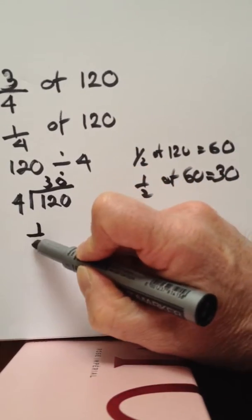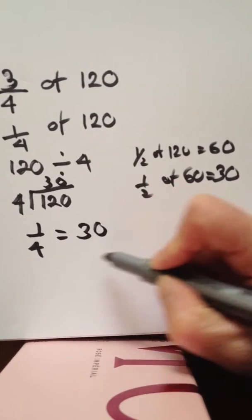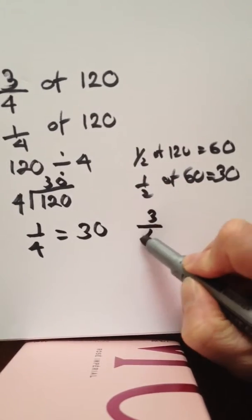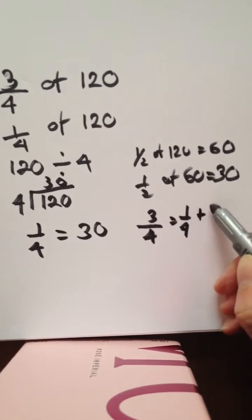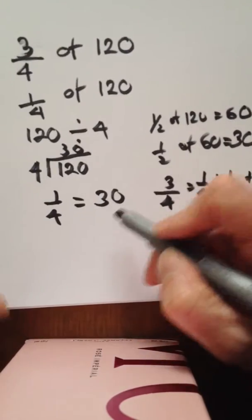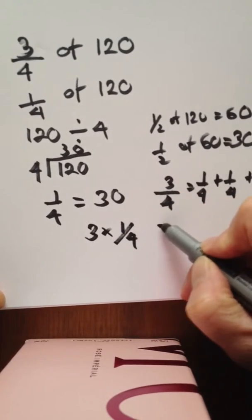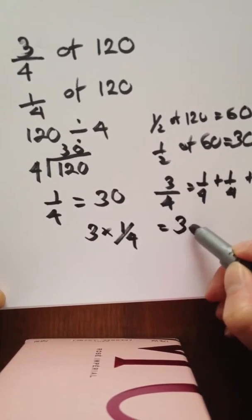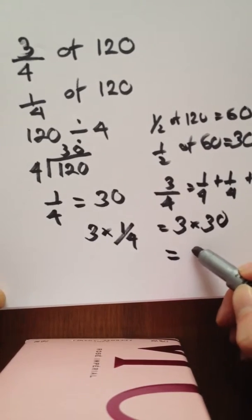We've got one quarter equals 30. But we want three quarters. Three quarters means a quarter plus a quarter plus a quarter, so three quarters is three times one quarter. As we know a quarter is 30, then three quarters will be three thirties, so our answer to this problem is 90.